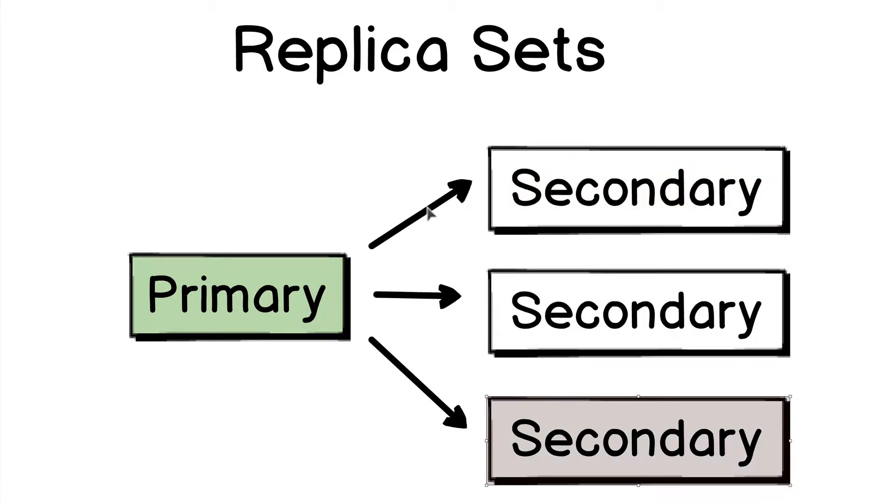You can make changes only on the primary server. If you update one of the documents, this update is automatically propagated to all secondary servers. In other words, it is replicated from primary to secondary. That is the process in the replica set.